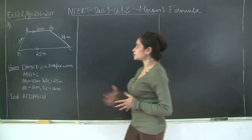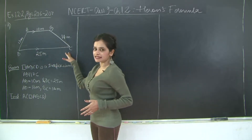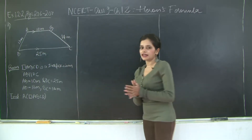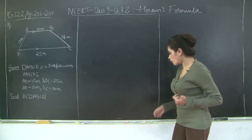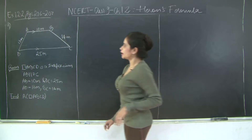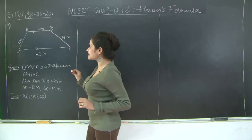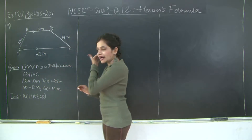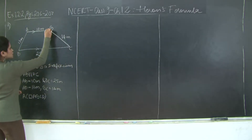Here you have trapezium ABCD wherein side AB is parallel to side DC and the dimensions are given as marked. I need to find the area of trapezium ABCD. Now if you notice I have AB parallel to DC. If I take a point E on DC such that BE is parallel to AD, let us do this construction.